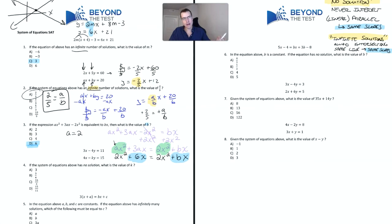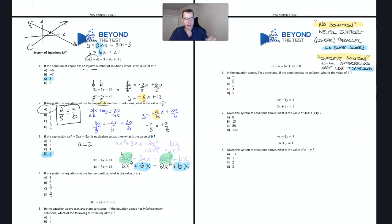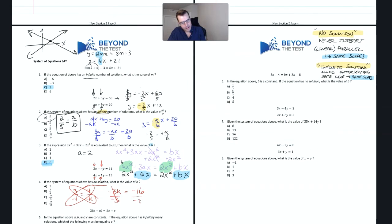For question four, the system has no solution — what is the value of k? Using our shortcut, since everything is lined up and no solution also means the slopes are the same, the ratio of coefficients must be equal: 3 is to −4 as 4 is to −k. Cross-multiplying: 3 × (−k) = 4 × (−4), so −3k = −16, and dividing by −3 gives k = 16/3. Choice C.